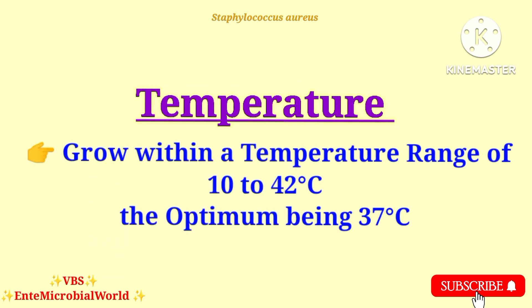Temperature: Staphylococcus aureus grows within a temperature range of 10 to 42 degrees Celsius, the optimum being 37 degrees Celsius.